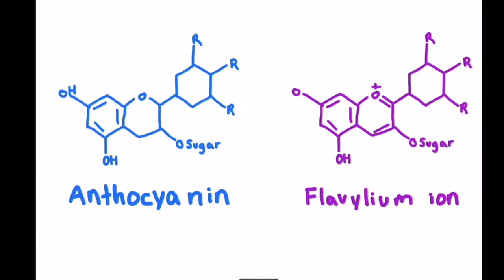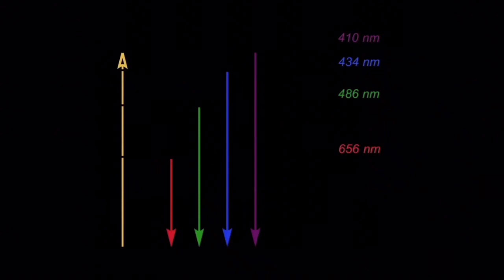Above is the flavilium ion, which is like anthocyanin, but without an H. It has lost a hydrogen. So this happens at pH 3 or lower, and so it loses a hydrogen, and the energy levels change, so it appears to be purple, red, or orange.